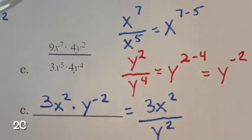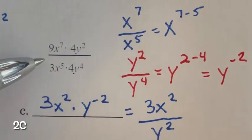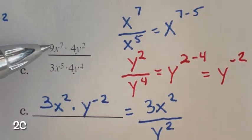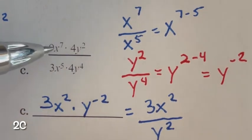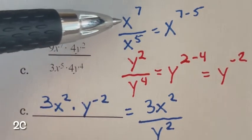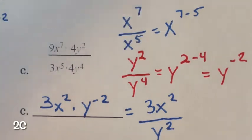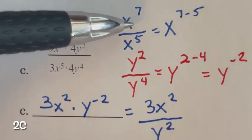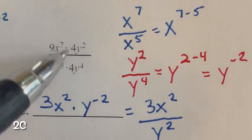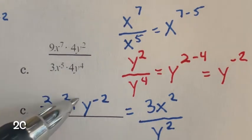For part c, we're dividing integer exponents. We have 9x to the seventh multiplied by 4y squared, divided by 3x to the fifth multiplied by 4y to the fourth. First, 9 divided by 3 is 3. For dividing exponents with the same base, you subtract them — 7 minus 5 equals 2, so x squared in the numerator. 4 divided by 4 is 1, and anything multiplied by 1 is itself — identity property of multiplication — so we can eliminate that 1.